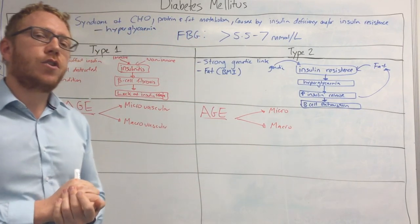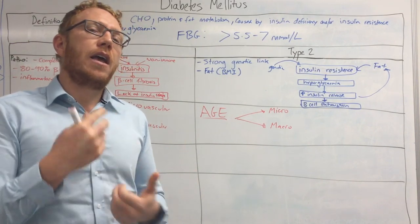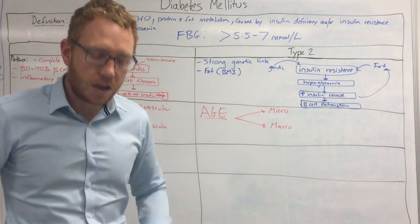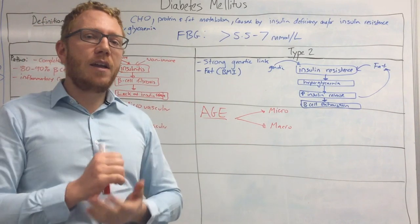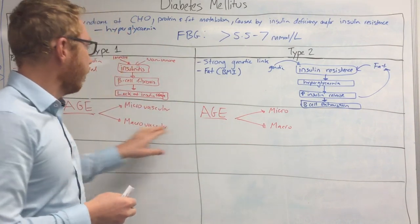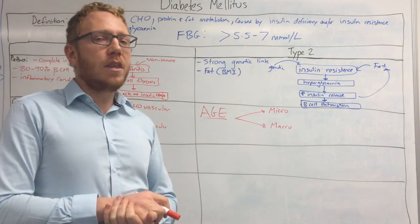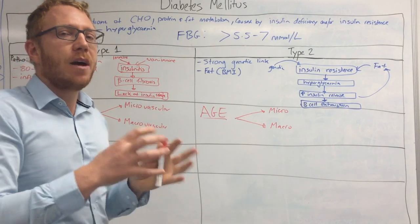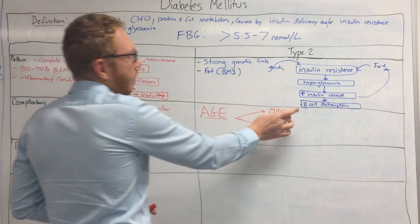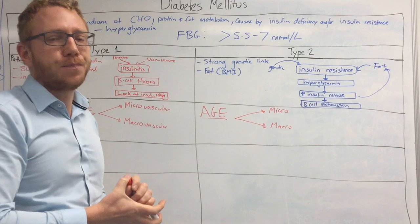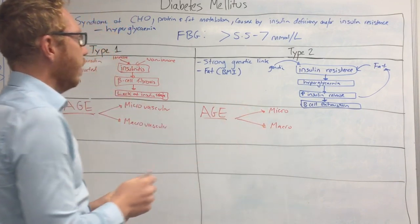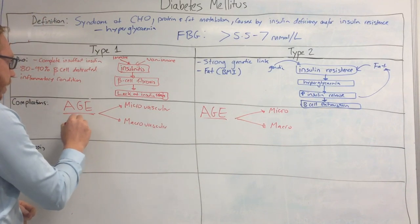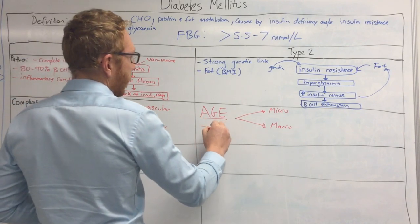Macrovascular complications include ischemic heart disease, increased risk of MI and angina, peripheral vascular disease, and cerebrovascular accidents. Studies show hyperglycemia has a stronger causal relationship with microvascular disease than macrovascular, where it's more correlative. Both types also have a decrease in immunity as a shared complication.